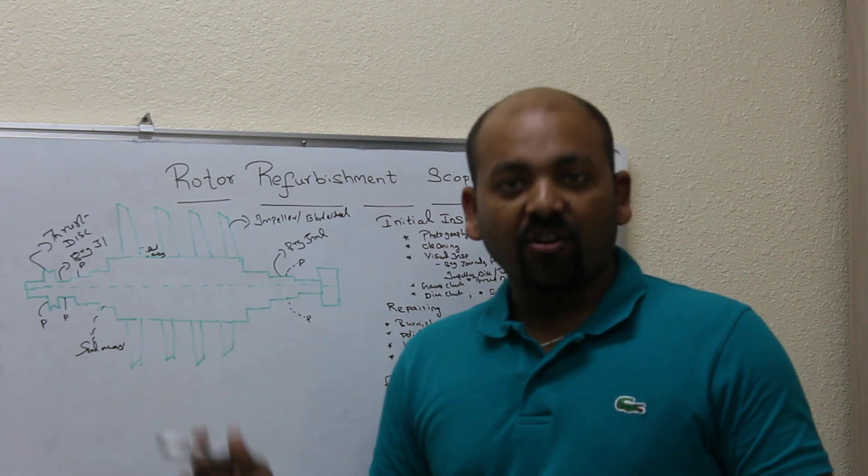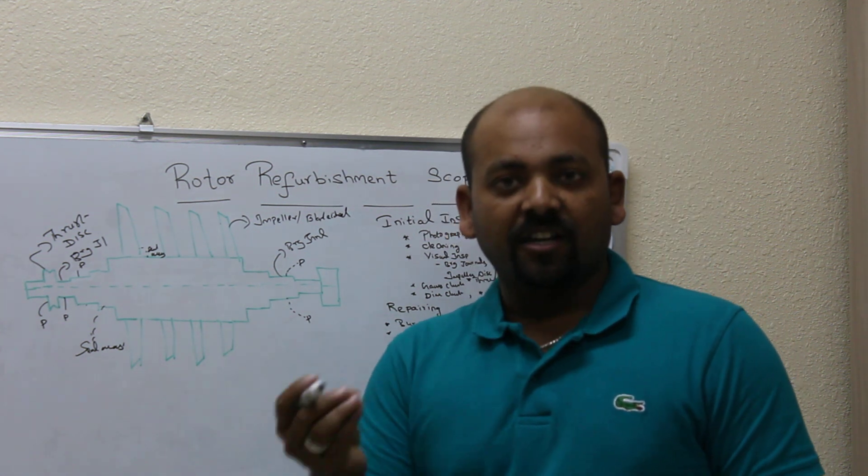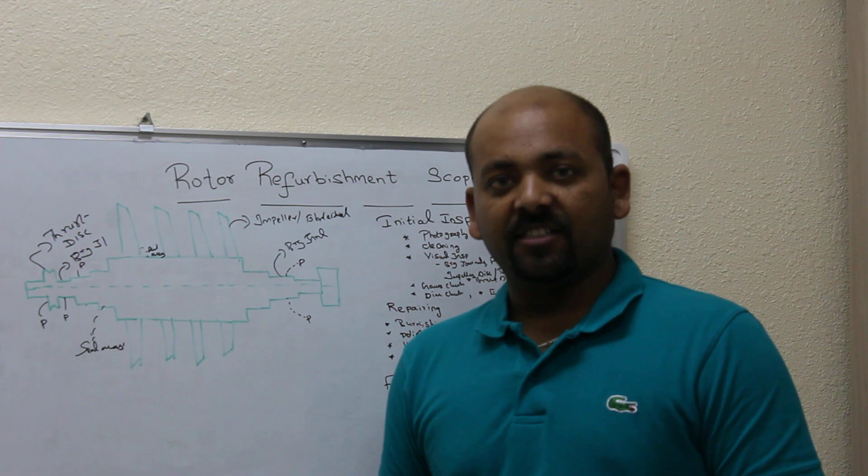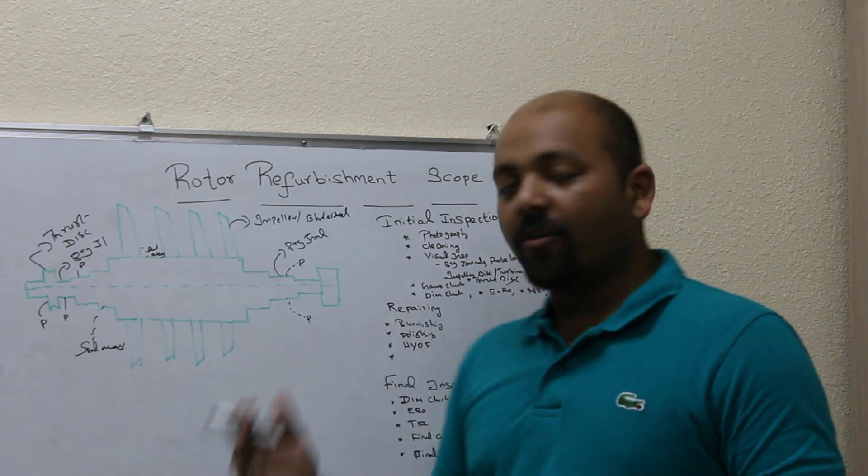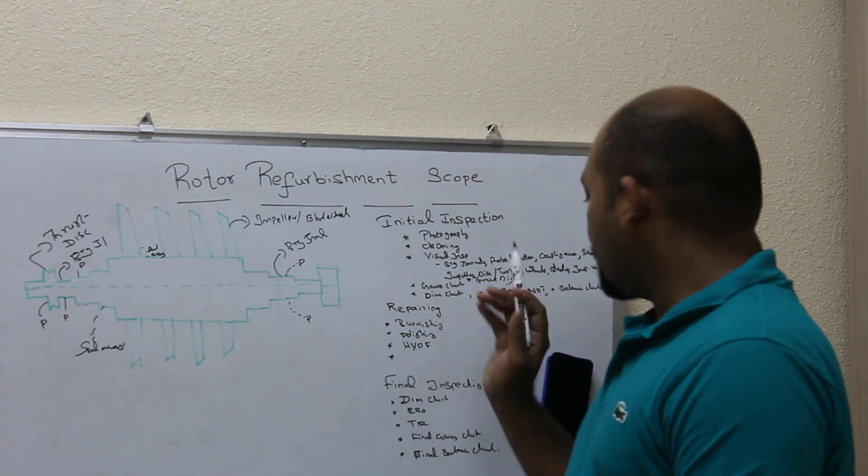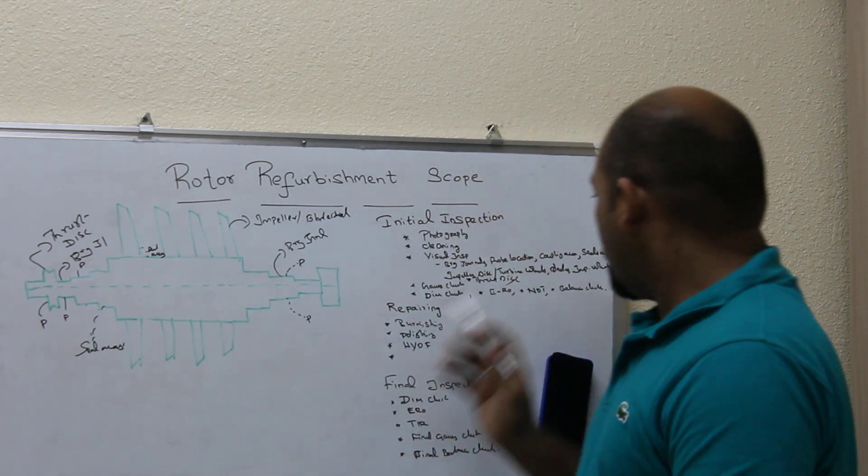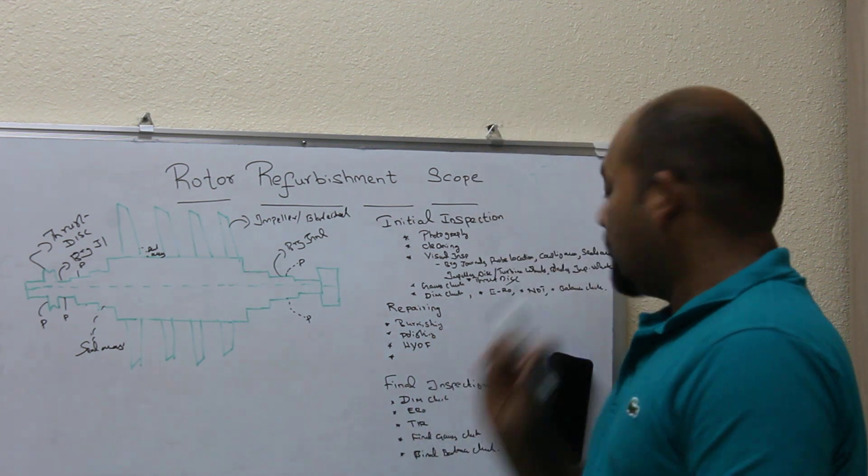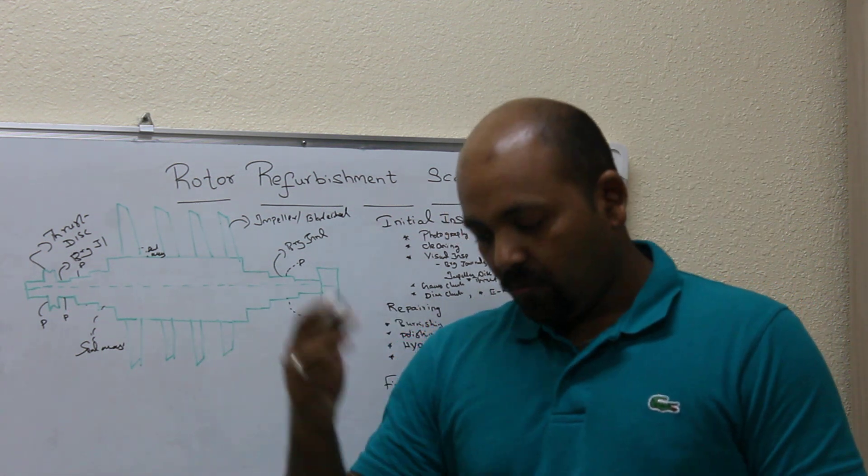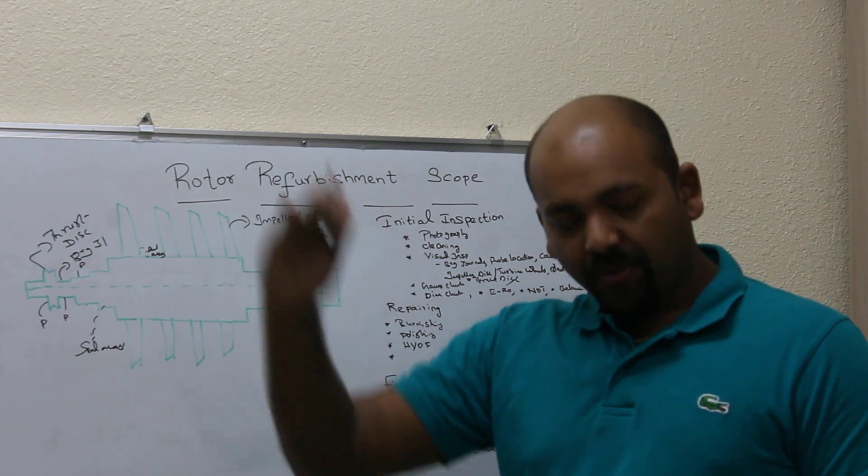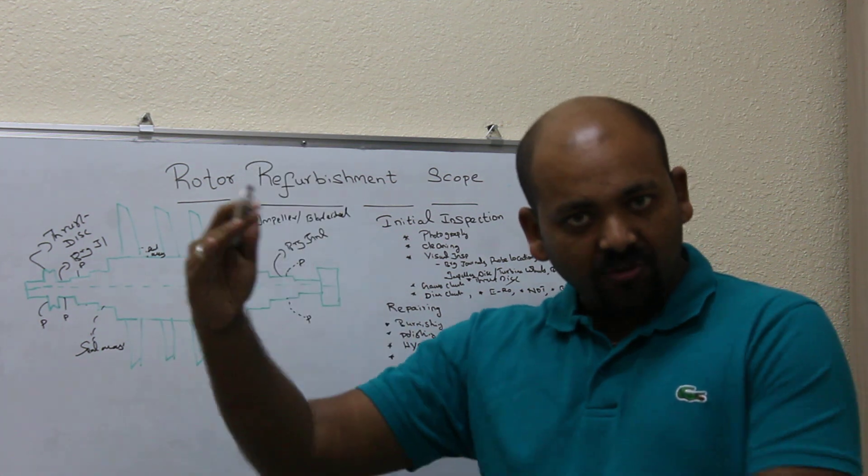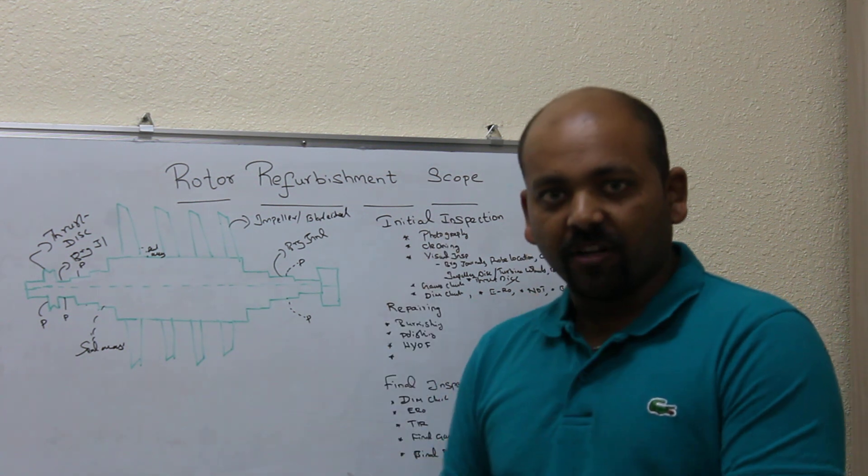After this, you should do the gauss check, which is measuring the magnetic flux existing in the rotor. Then you should go for dimensional check, electrical runout, NDT (non-destructive test), and balance check. Once you complete this initial inspection, you should develop the report. The workshop team should develop the report with photography.